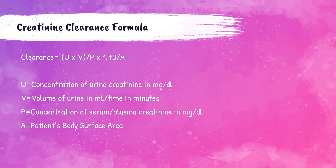The formula for calculating a patient's creatinine clearance is U times V divided by P, times 1.73 divided by A. U equals the concentration of urine creatinine in milligrams per deciliter. V is the volume of urine in milliliters per minute. P is the concentration of creatinine in the serum or plasma in milligrams per deciliter. And A is the patient's body surface area. The 1.73 is a constant — it's the standard body surface area of a human.